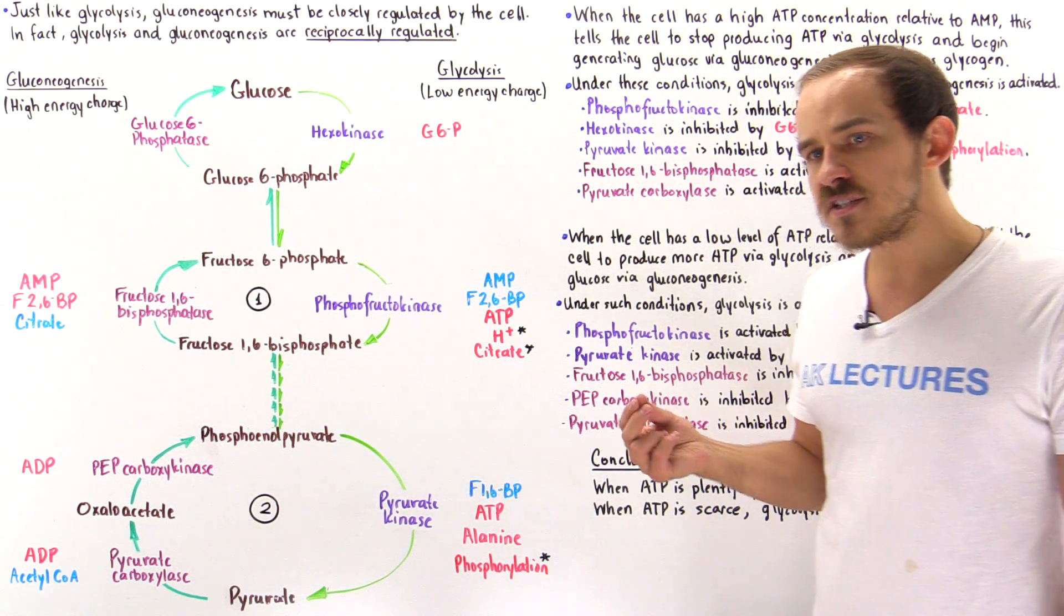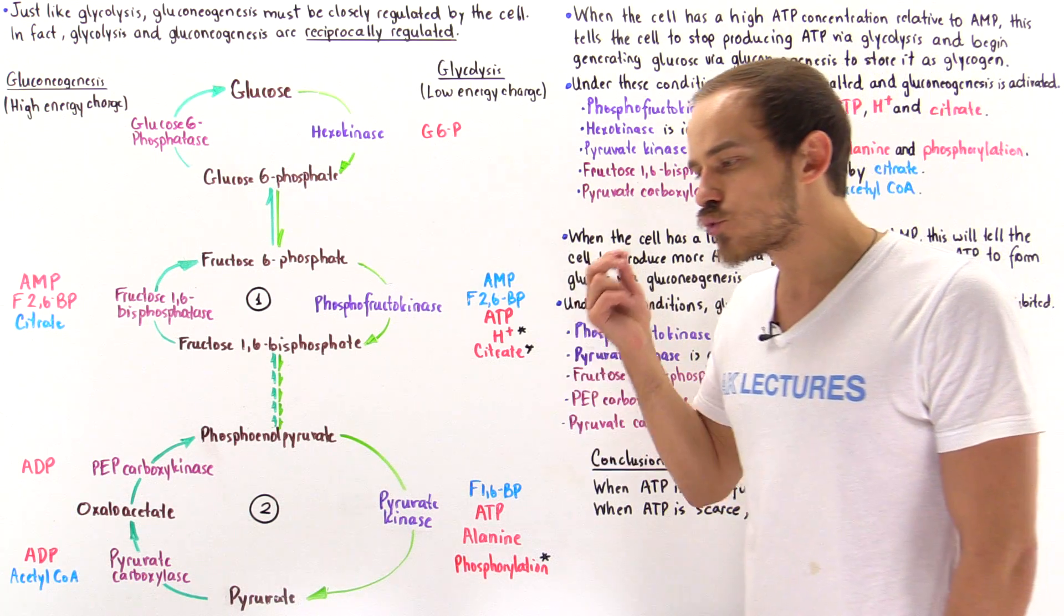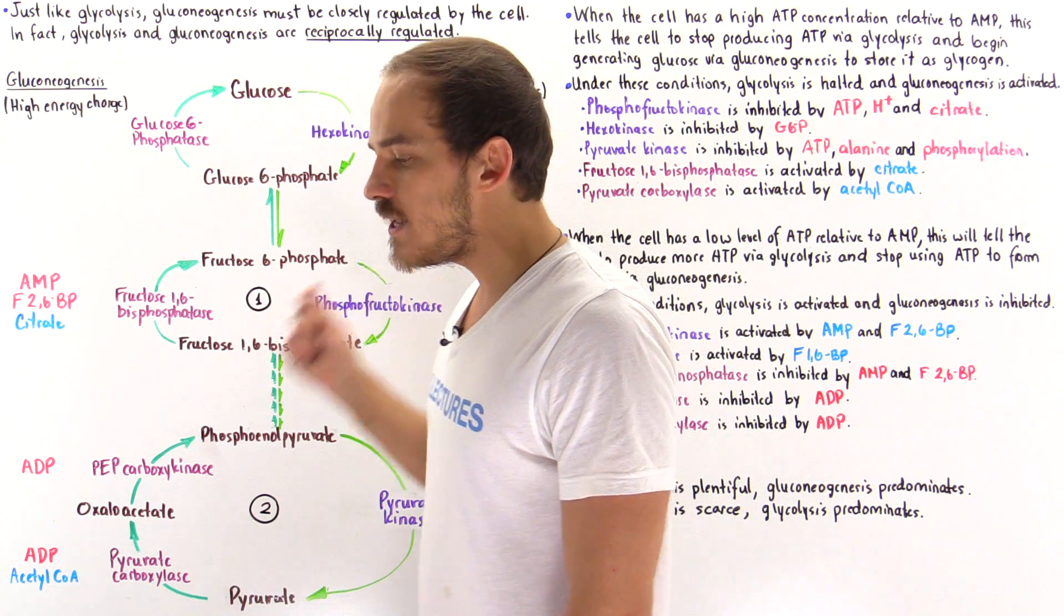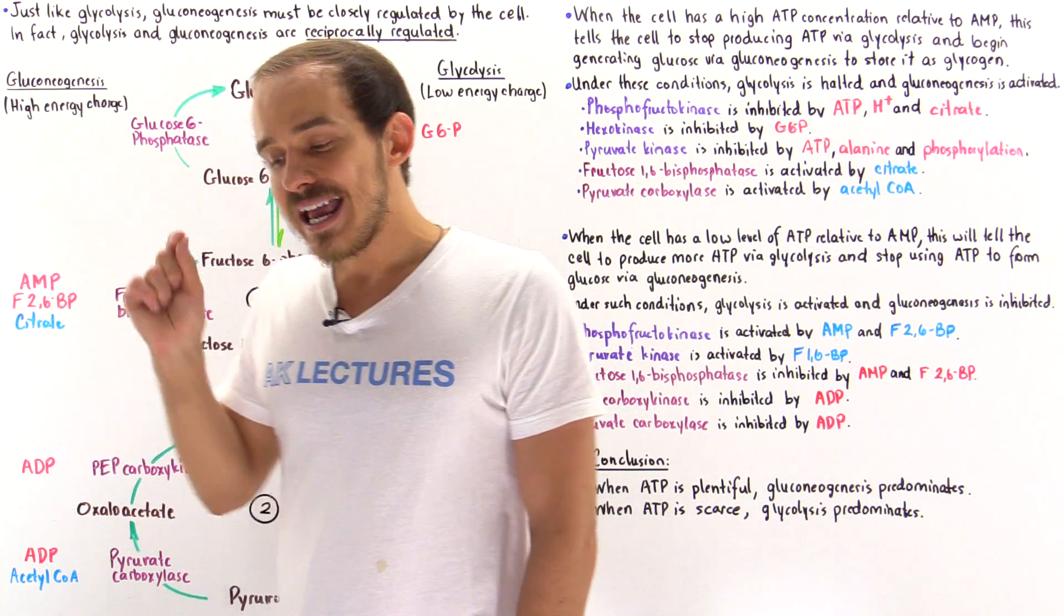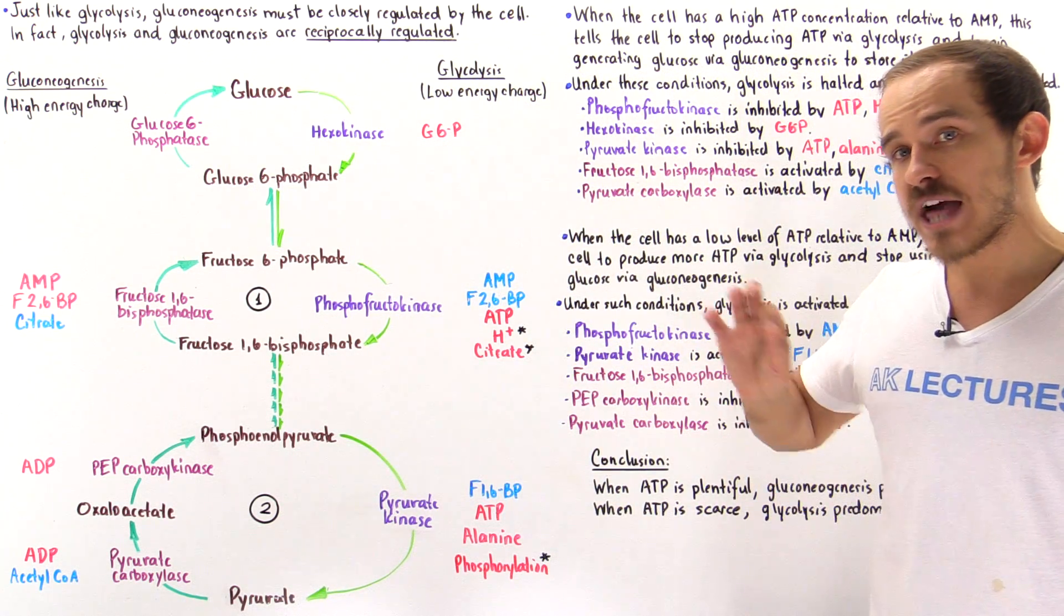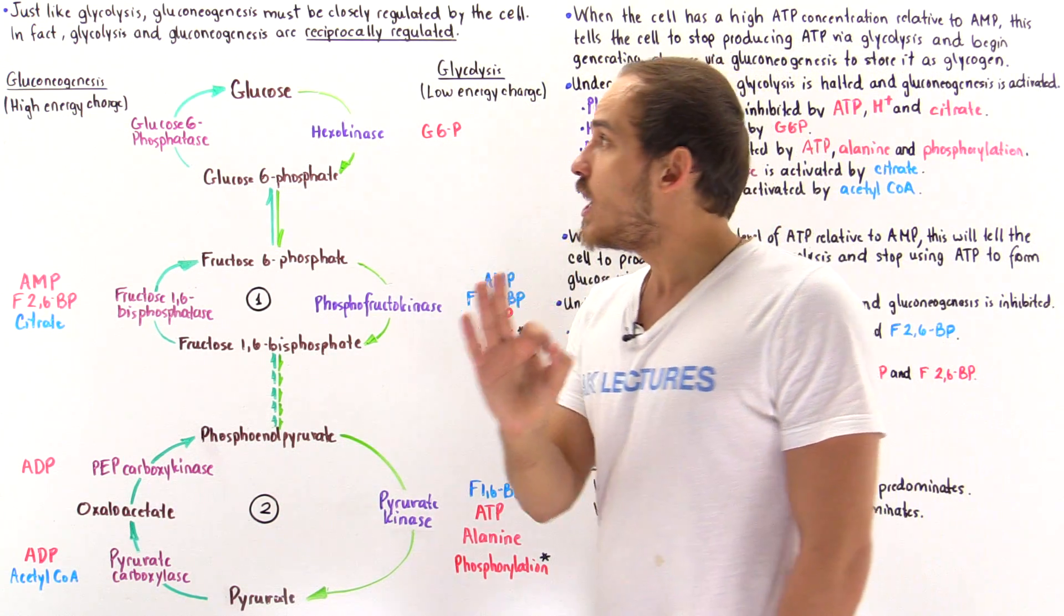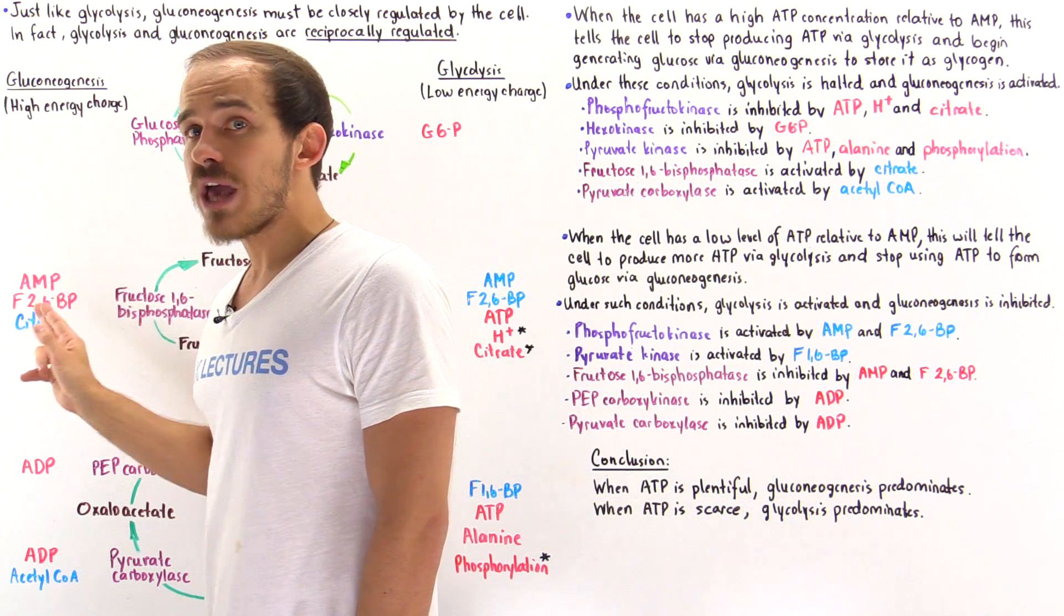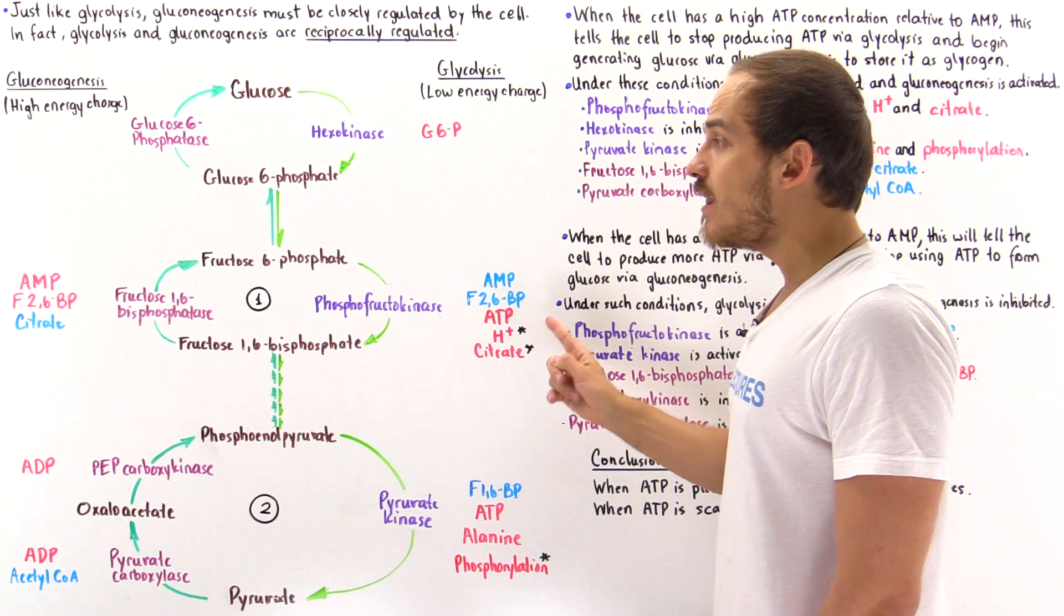Well, because Le Chatelier's principle is used strictly for those reactions which are at equilibrium. And if a reaction is at equilibrium, that means the Gibbs free energy in that process is zero.